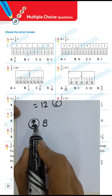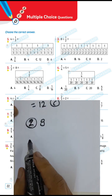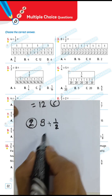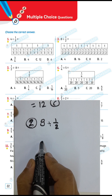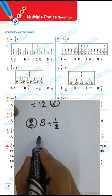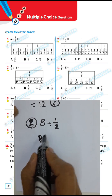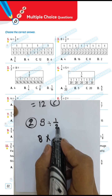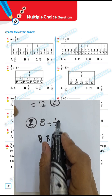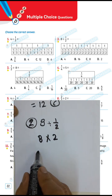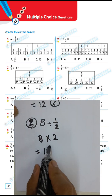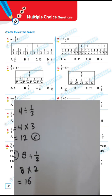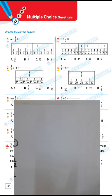Question number 2: 8 divided by 1/2. You can solve this example by writing 8 and converting from division to multiplication, then writing the inverse of 1/2, which is 2. So 2 times 8 equals 16.